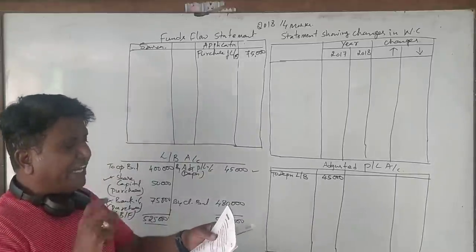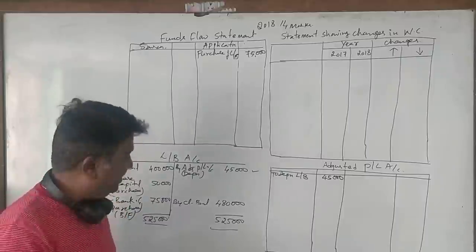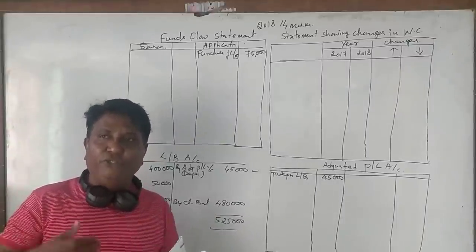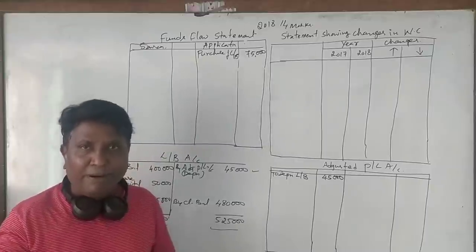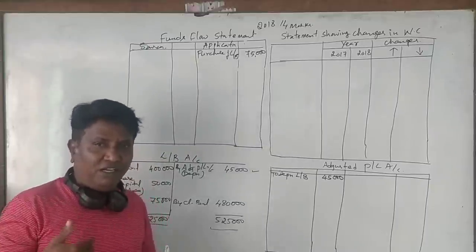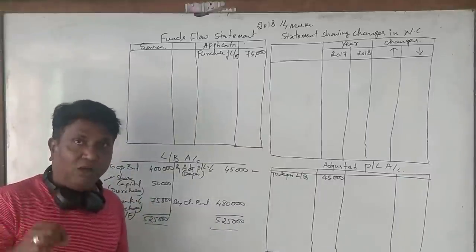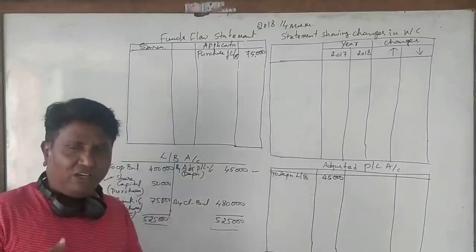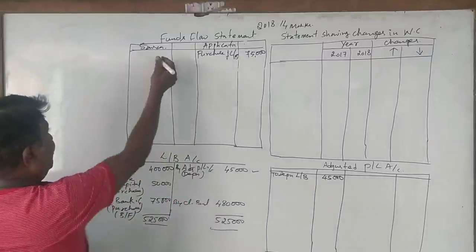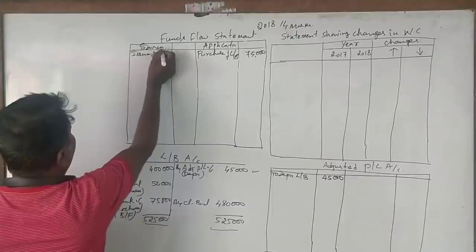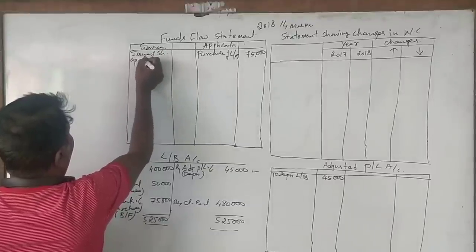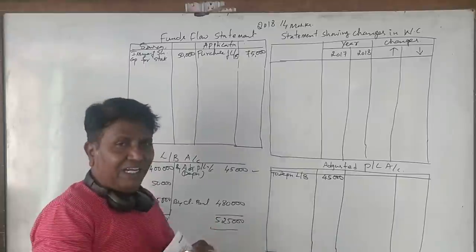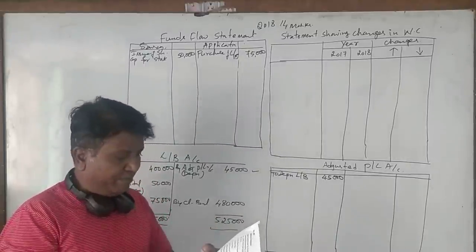What about the share capital issued for land and building of Rs 50,000? And the remaining Rs 50,000 — we are getting stock for share capital. That means we issued share capital in one lump for buying land and building and stock of another company. Land and building is already shown in the land and building account. But for this Rs 50,000 of stock purchased, since stock is always convertible into cash, I will show it in the sources as: issue of share capital for stock — Rs 50,000. Now the share capital item in the balance sheet is complete.